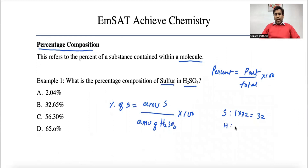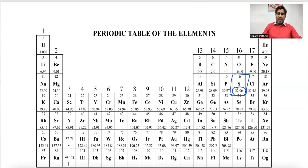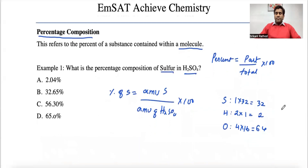Two hydrogen atoms multiplied by atomic weight 1 gives a total contribution of 2. Similarly, there are four oxygen atoms, and the atomic weight of oxygen is 16, so 4 times 16 gives 64. All atomic weights are referred from the periodic table. Adding them up: 32 plus 2 plus 64 equals 98, so the total atomic mass unit of sulfuric acid is 98.